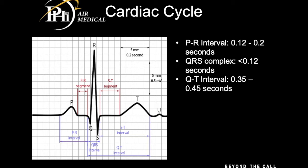The first segment we look at is the PR interval, measured from the beginning of the P wave to the beginning of the R wave. It should be less than five little boxes. Each little box is 0.04 seconds, so five boxes equals 0.2 seconds. If the PR interval is longer than 0.2 seconds, we have a heart block. When looking at the PR interval, we're really assessing how well the AV node is functioning.